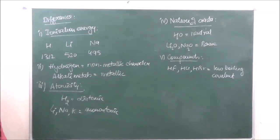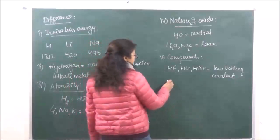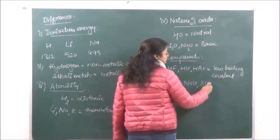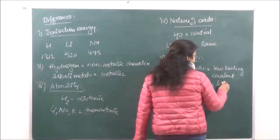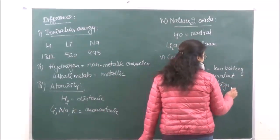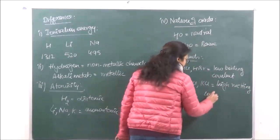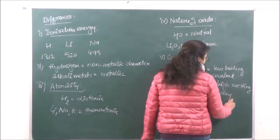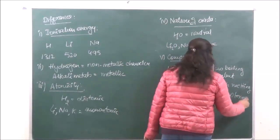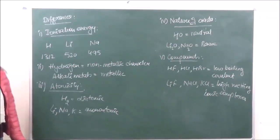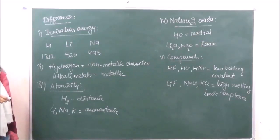Whereas when talking of halides of alkali metals — like lithium chloride, NaCl, KCl — they are high melting ionic compounds. So these are the differences of hydrogen from alkali metals.